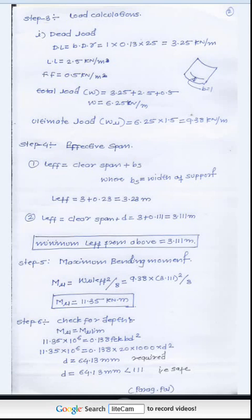We also perform a check for depth. We compare M equals M_limiting. M_limiting is obtained from the relevant table based on steel grade. From this relation, we get the required value of D. Comparing with the initially assumed D, the calculated D is less than the assumed D, so the slab depth is safe.